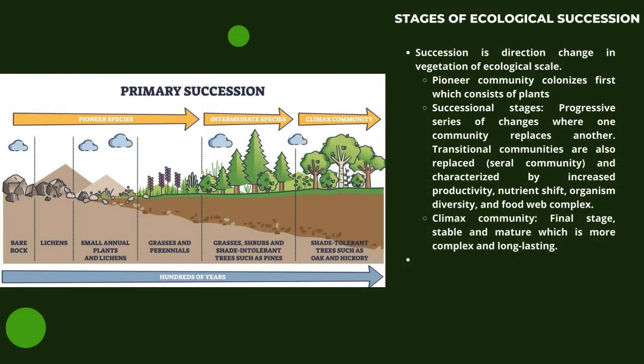Let us learn about the stages of ecological succession. Succession is a directional change in vegetation at an ecological scale. It starts from a pioneer community, which consists of plants, followed by successional stages where a progressive series of changes occurs, where one community replaces another.